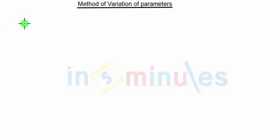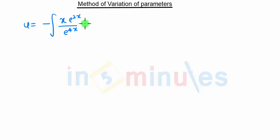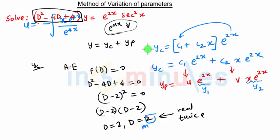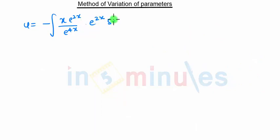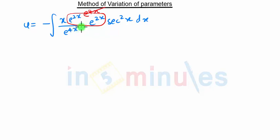First we will concentrate on u. u is minus the integration of x·e^(2x) divided by e^(4x). In our case x is nothing but e^(2x)·sec²x, so x is e^(2x)·sec²x·dx. The e^(2x) terms multiply to give e^(4x) in the numerator, and this e^(4x) and e^(4x) in the denominator get cancelled, giving us minus the integration of x·sec²x·dx.